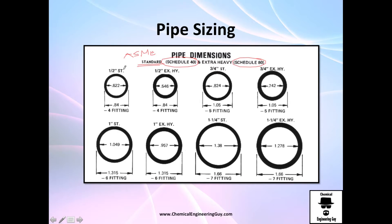You'll see that when they list a half-inch pipe, the actual values shown are different from what you'd expect. The important thing is that the actual interior size versus the outside size are not the same. Keep in mind that when they say a pipe is 2 inches, schedule 40 according to ASME, it doesn't mean the pipe is literally 2 inches in either dimension.